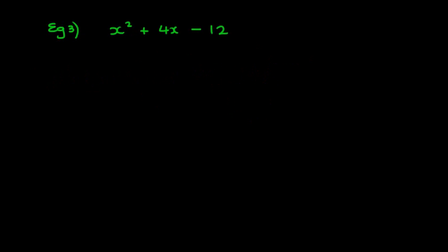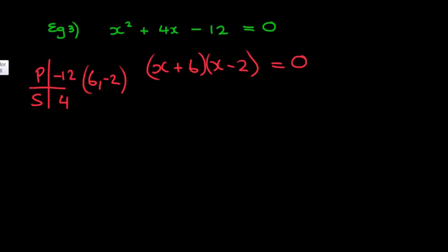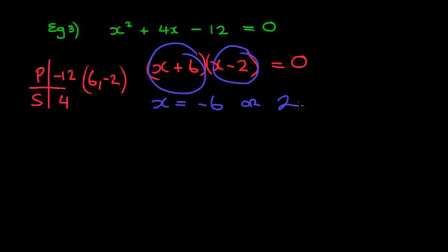Another question: x squared plus 4x minus 12 equals 0. No common factor, not a difference of two squares. Using product and sum: product is negative 12, sum is 4. The numbers 6 and negative 2 work — 6 minus 2 is 4, and 6 times negative 2 is negative 12. So we get x plus 6 times x minus 2 equals 0. For the left bracket: x equals minus 6. For the right bracket: x equals 2, because 2 minus 2 is 0.